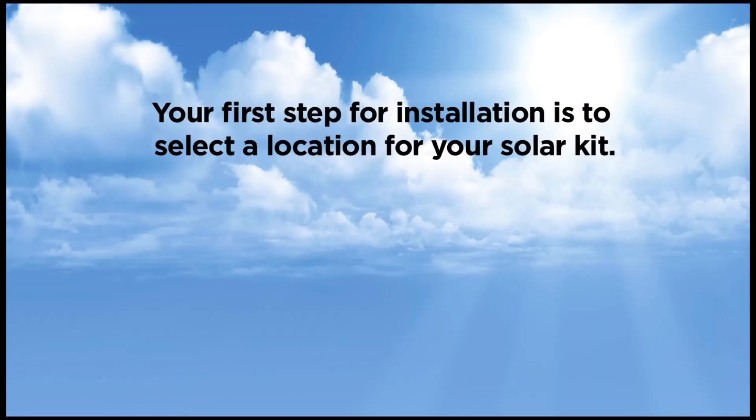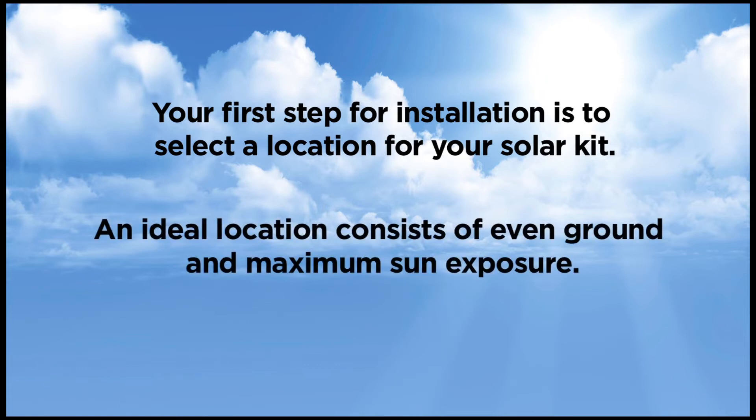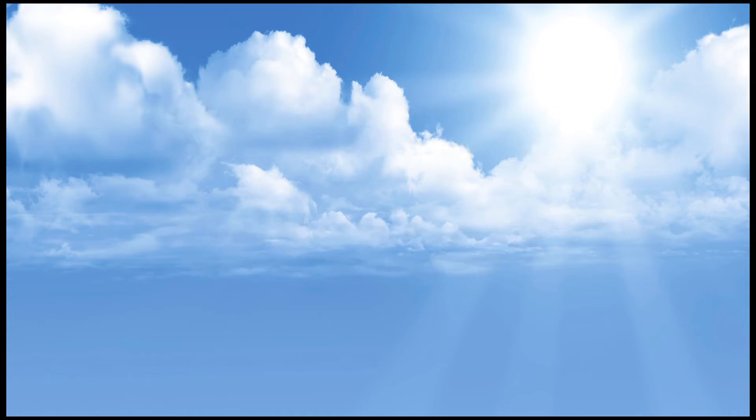Your first step for installation is to select a location for your solar kit. An ideal location consists of even ground and maximum sun exposure. Though high sun exposure is best, amorphous solar panels operate in all daylight conditions. It is now time to set up your support frame.